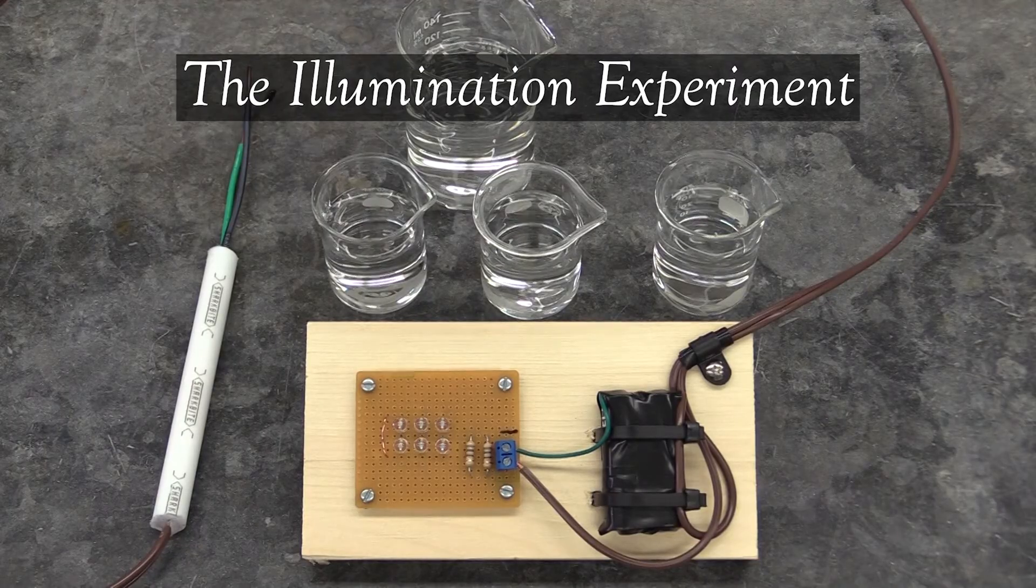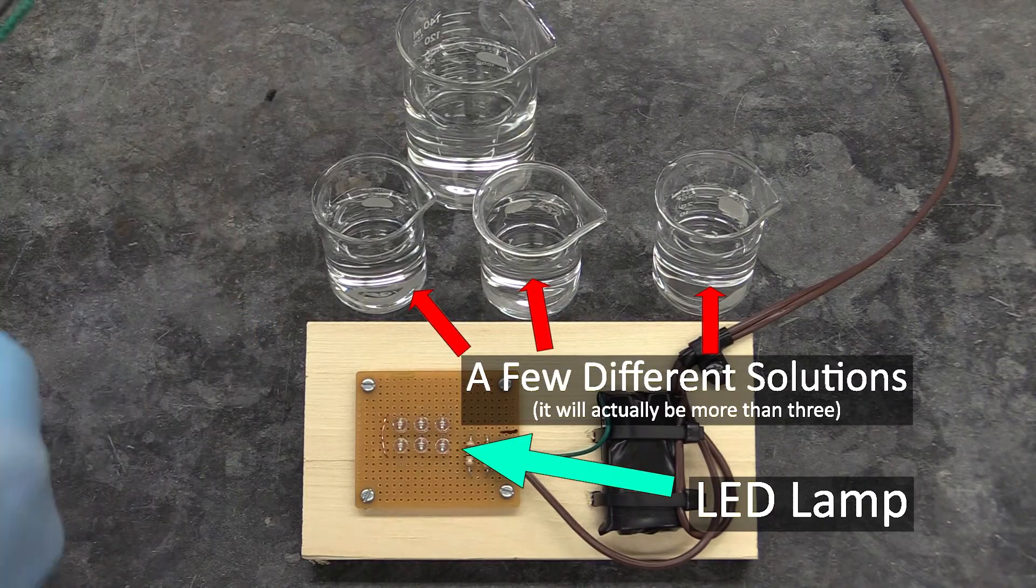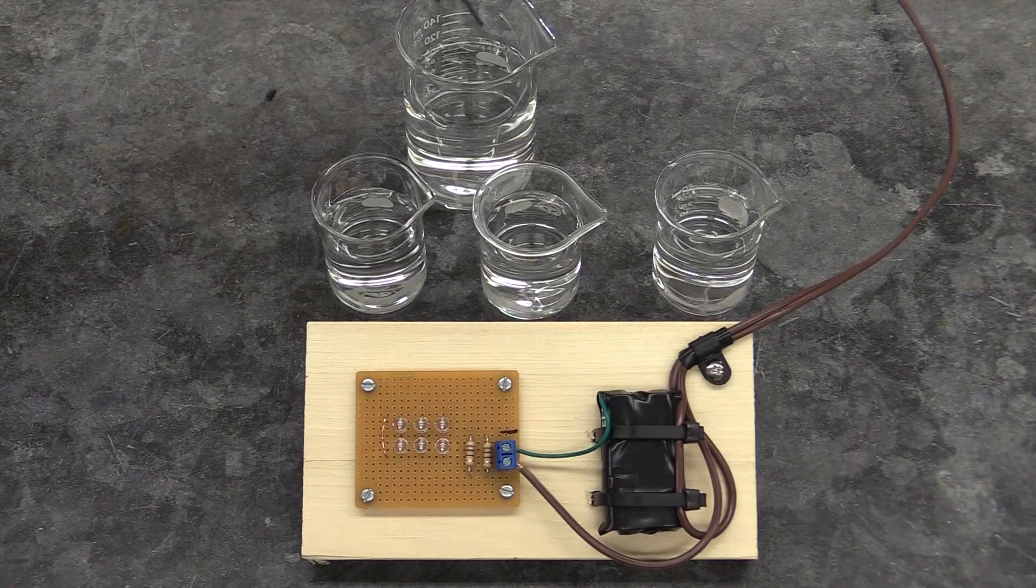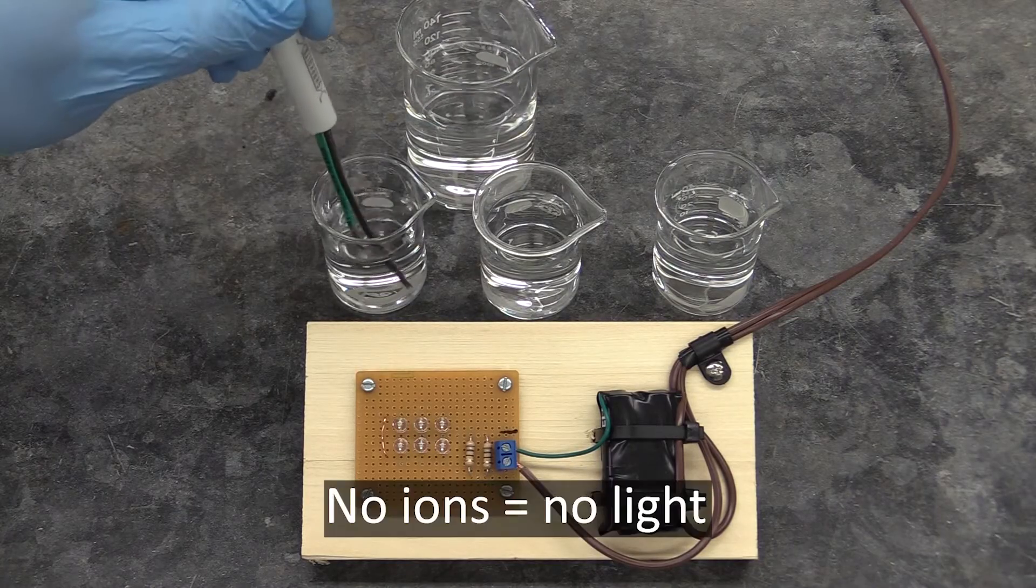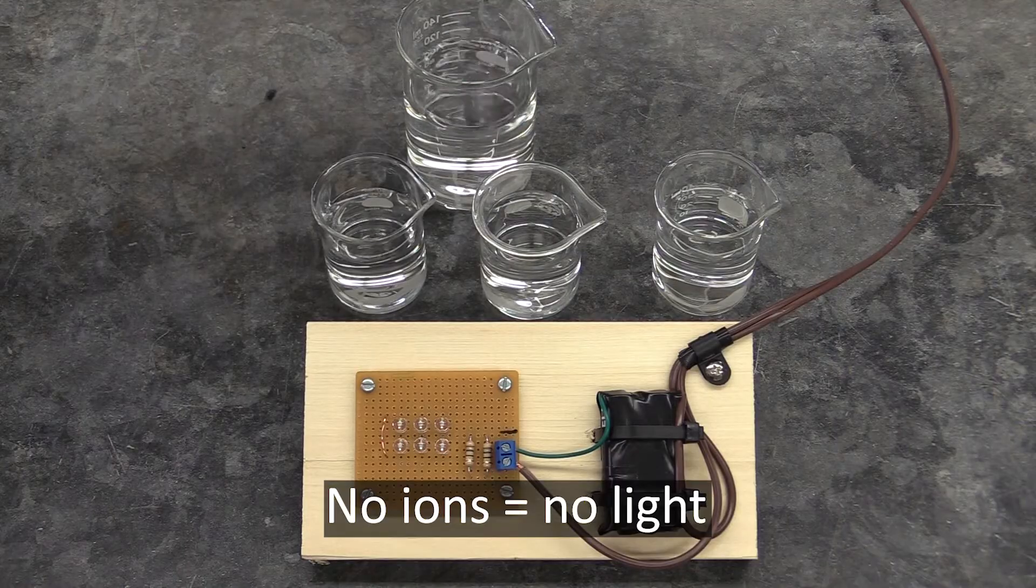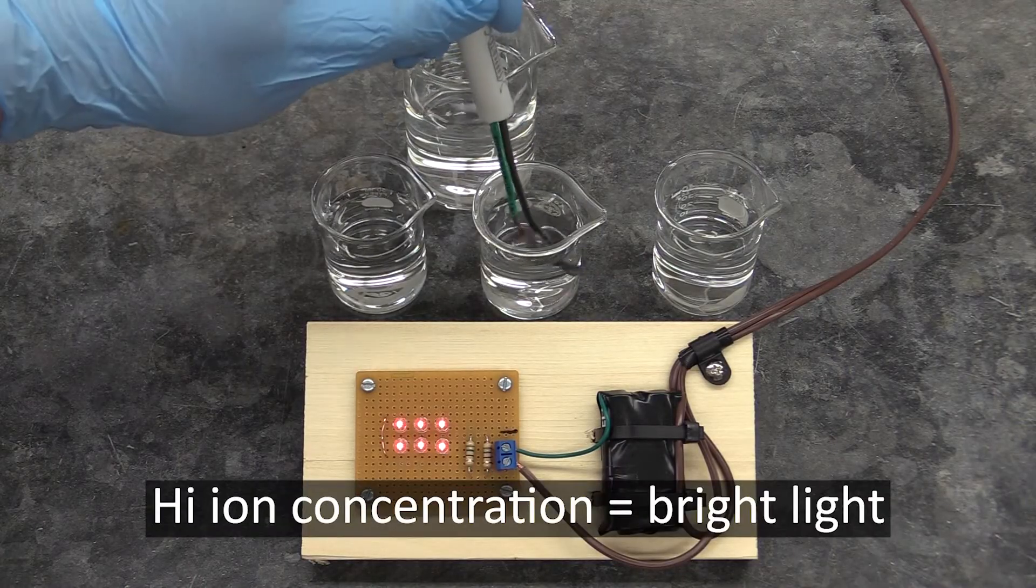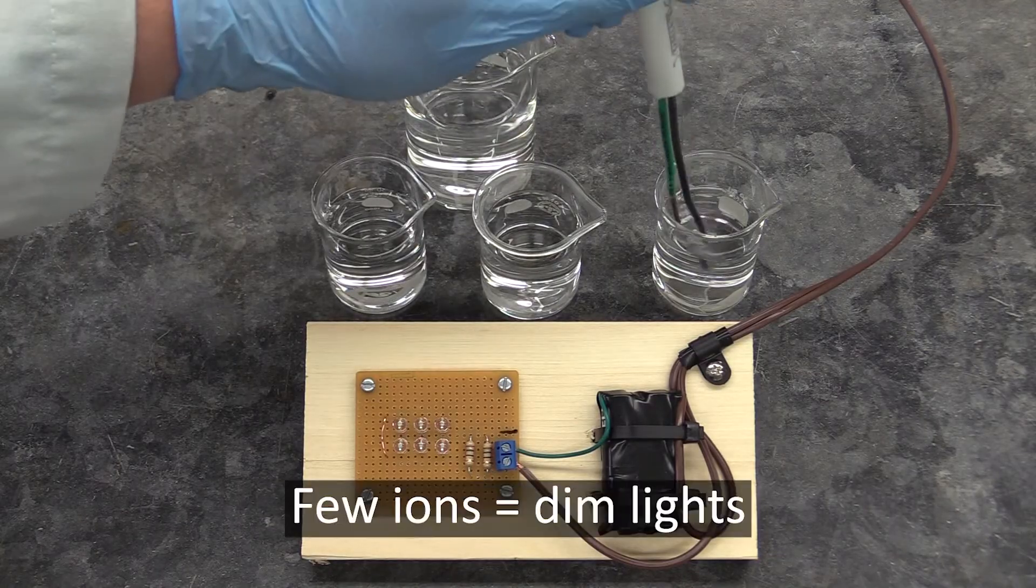In the illumination experiment, you will use an LED lamp to test a few different solutions for their ionic strength. If the solution you're testing has no ions dissolved in it, it won't be able to conduct electricity and the LEDs won't light. If the solution has a lot of ions, it will conduct electricity and the lamp will light up brightly. And if it has a few ions, the LEDs will light, but they'll be dim.